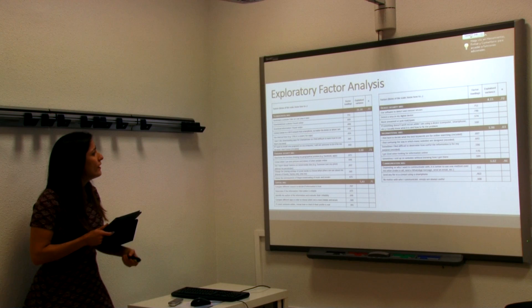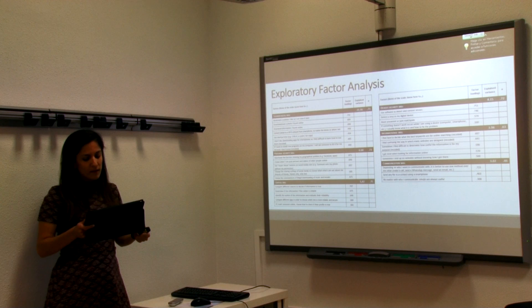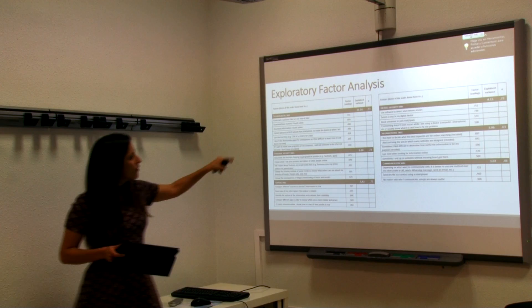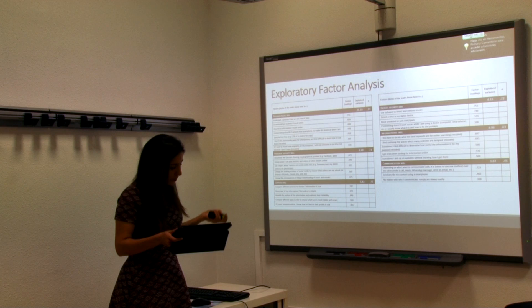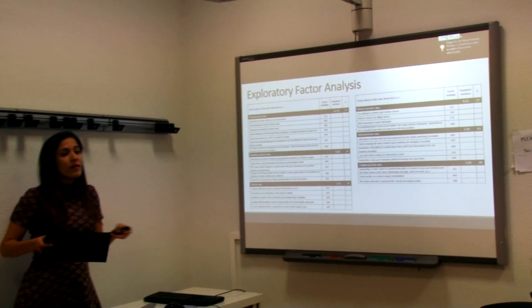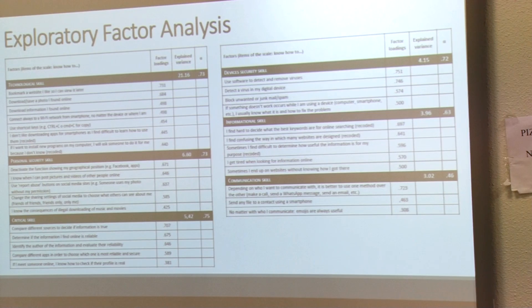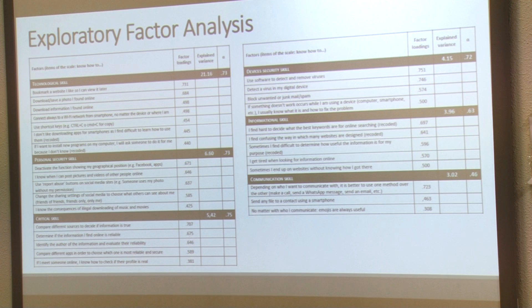The exploratory factor analysis revealed the existence of six different digital skills. The internal consistency reliability of the factors was examined using Cronbach's alpha, which was found to be reliable in five of the six factors. In the last factor, we have an acceptable Cronbach's alpha, but as we are in the early stages of our research, we decided to retain it in order to improve it in future research.